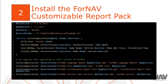The installation of Fornav Universal Code starts with the installation of the customizable report pack from the Fornav website. Please make sure that you download the correct version. If you need the DLL version, you need the DLL version. If you need Universal Code, you need to find the Universal Code version on the Fornav website.